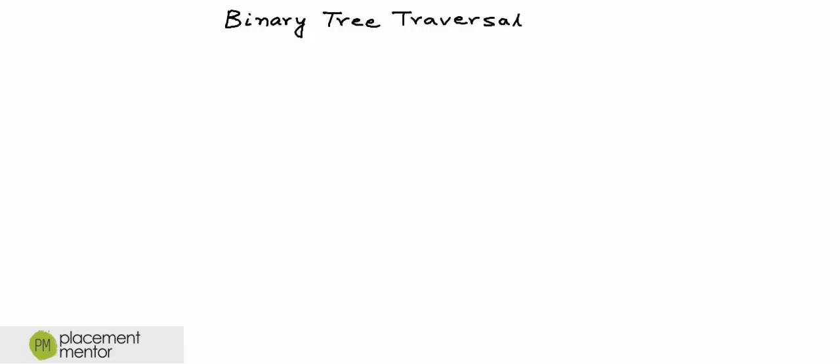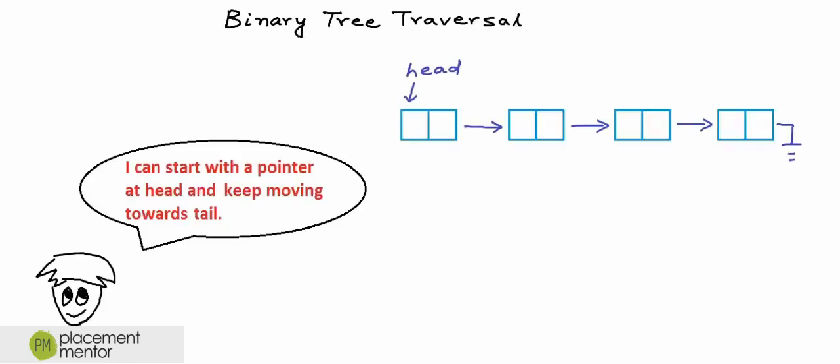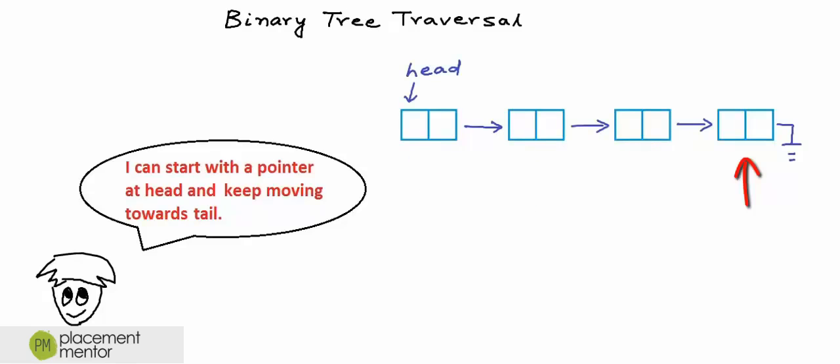In this lesson we are going to talk about binary tree traversal. When we are working with trees, we may often want to visit all the nodes in the tree. Now tree is not a linear data structure like array or linked list. In a linear data structure there would be a logical start and a logical end, so we can start with a pointer at one of the ends and keep moving it towards the other end. For a linear data structure like linked list, for each node or element we would have only one next element.